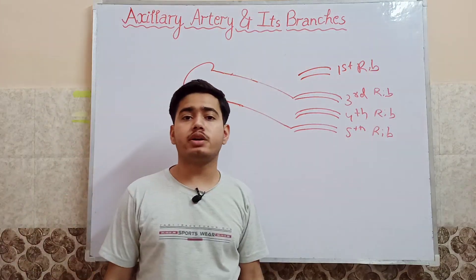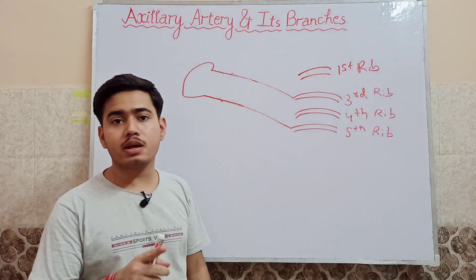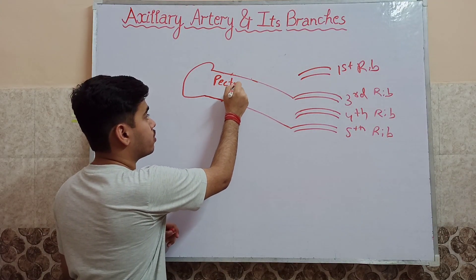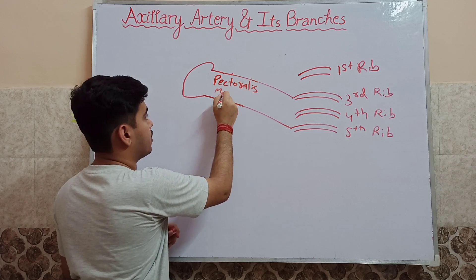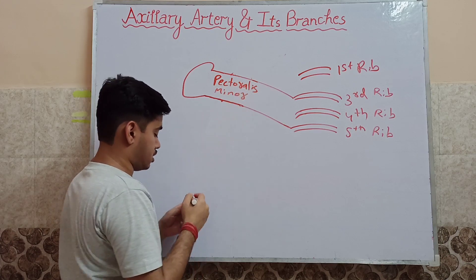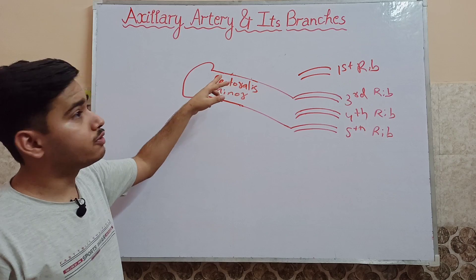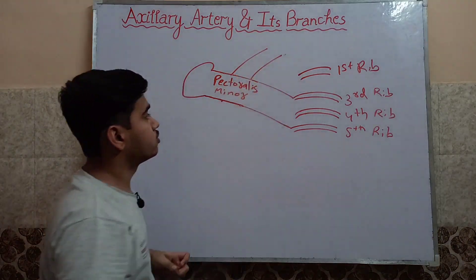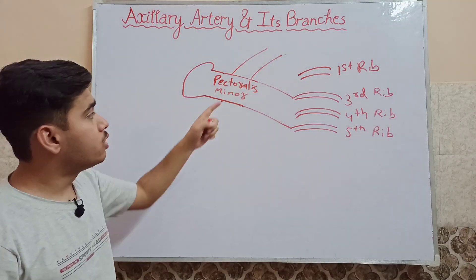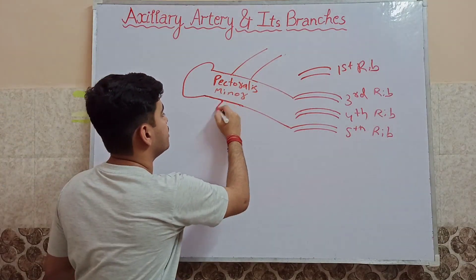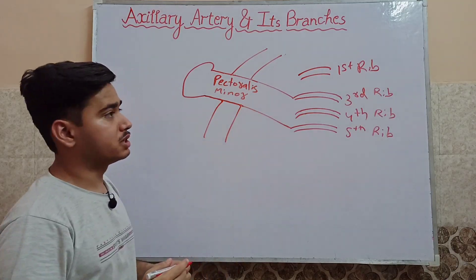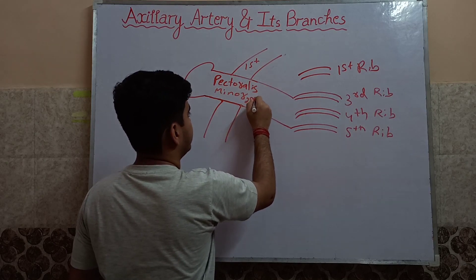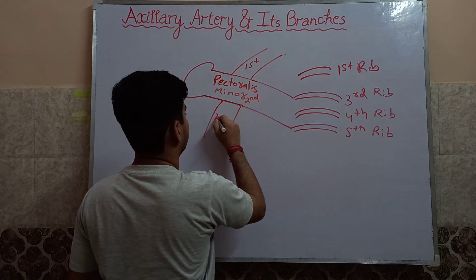The axillary artery is divided into three parts on the basis of the pectoralis minor muscle. The first part will be superior to this muscle. The second part will be posterior to this muscle. The third part will be inferior to this muscle.